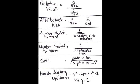What is the equation of attributable risk? The equation of attributable risk is A over A plus B minus C over C plus D.